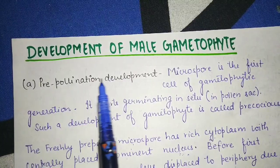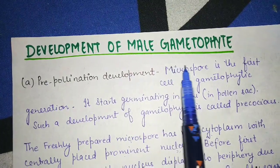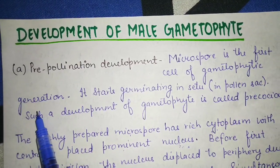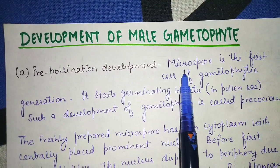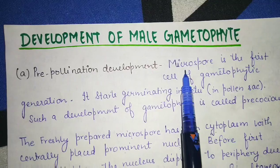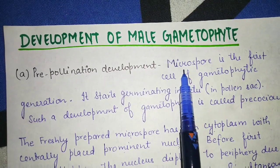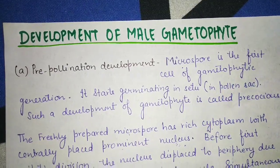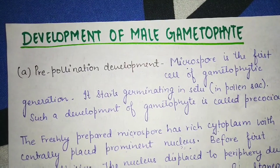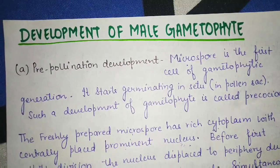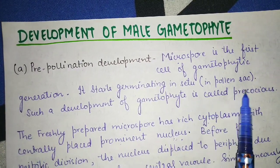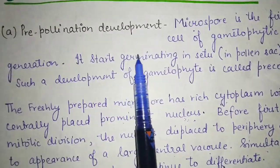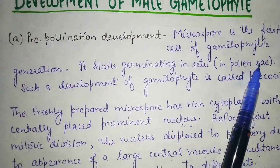Starting with pre-pollination development, the microspore is the first cell of the gametophytic generation. The microspore tetrad is found inside the pollen sac by the process of meiosis of microspore mother cells. The microspore starts germinating in-situ, which means within the pollen sac.